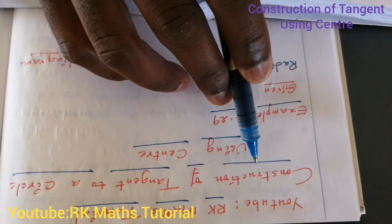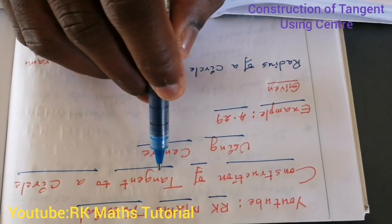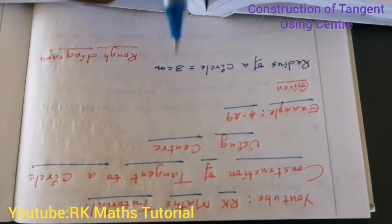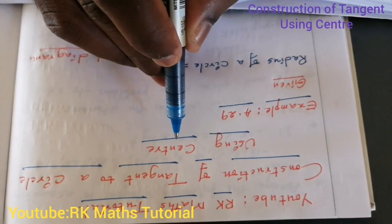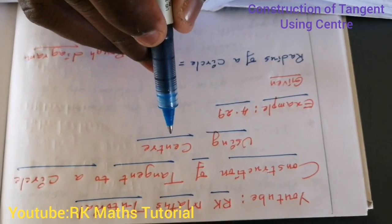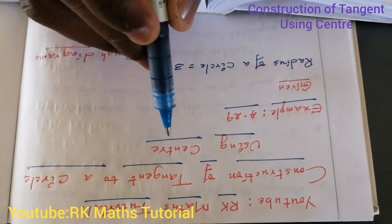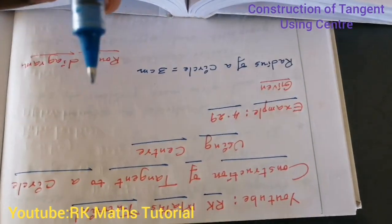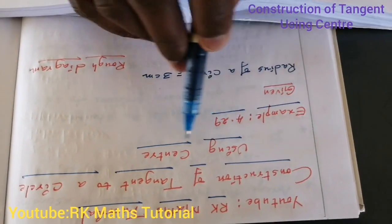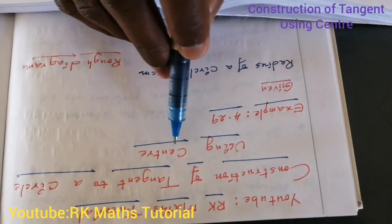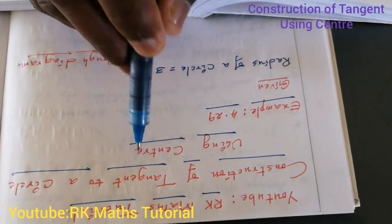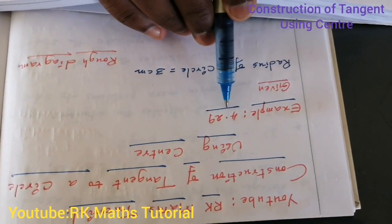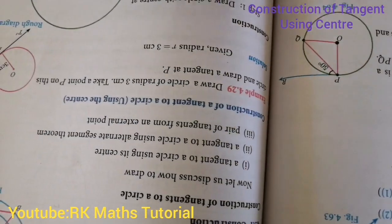For circle tangent construction, there are three types. Using center is one type, alternate segment theorem is the second type, and the exterior point is the third type. First we'll look at using center, so how to construct using center. Let's look at example 4.29.